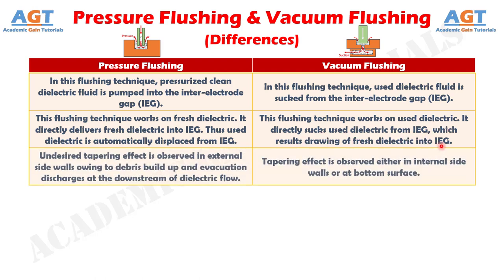Number 3: in pressure flushing technique, an undesired tapering effect is observed in external side walls owing to debris buildup and evacuation discharges at the downstream of dielectric flow, whereas in vacuum flushing technique, tapering effect is observed either in internal side walls or at the bottom surface.